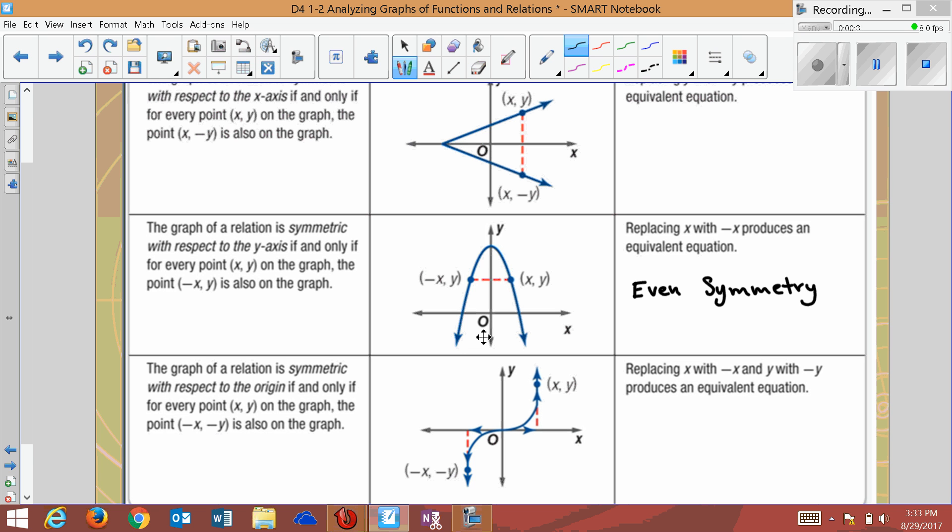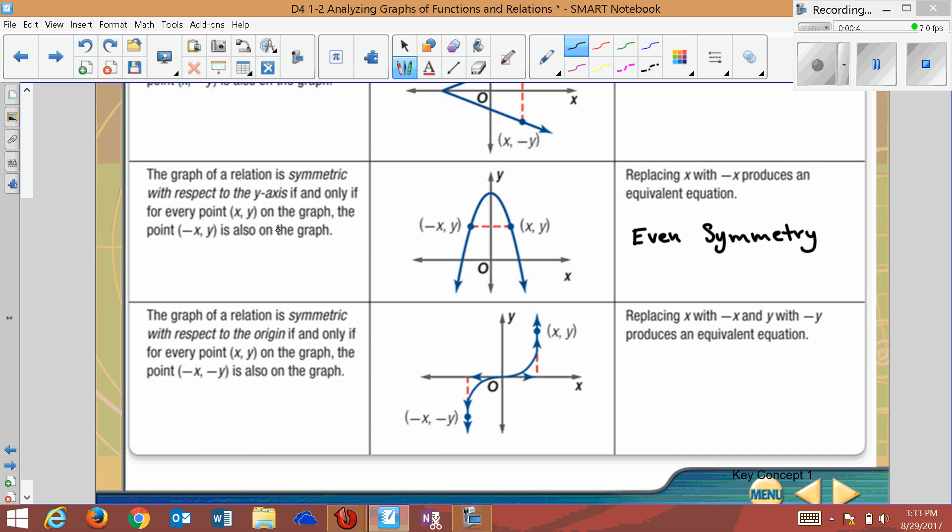It's even if it can be cut in half, kind of like your face, how your face is even. Now we couldn't cut it horizontally, like up here, but we could cut it vertically. That's why it's even. And it's also called symmetric with respect to the x-axis.